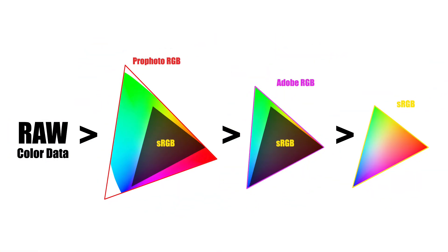First of all, RAW photos often contain colors outside of both sRGB and Adobe RGB color spaces, especially in the high-saturation and shadow regions. ProPhoto RGB ensures that whatever actual saturation an image may have remains unclipped. Of course, if your image doesn't have those colors, you won't see much of a difference.